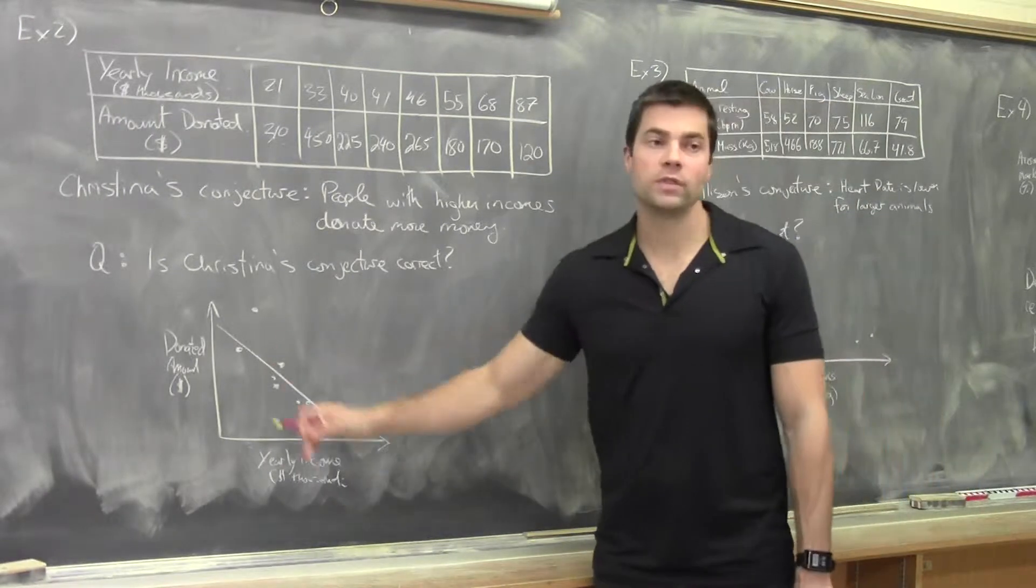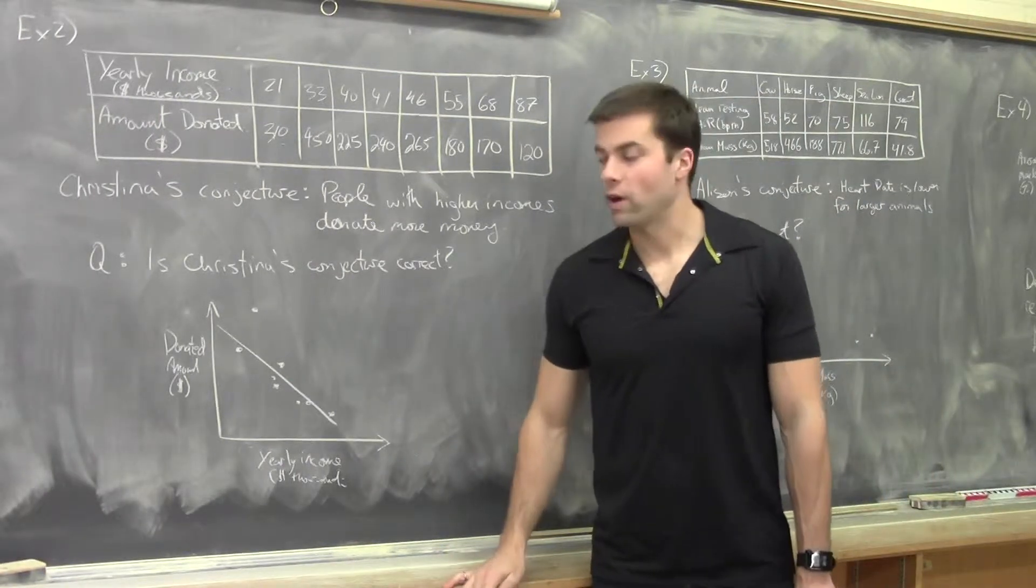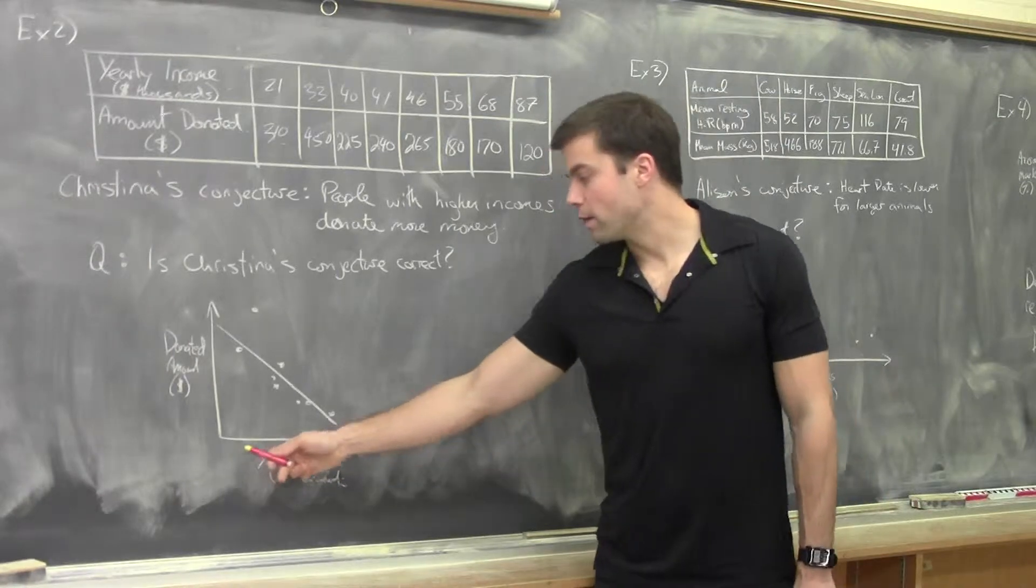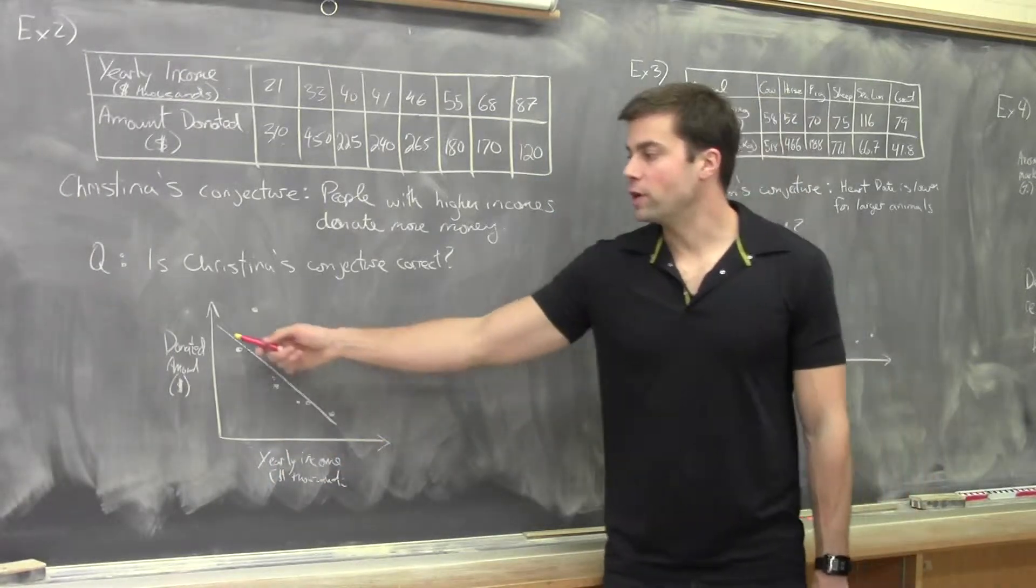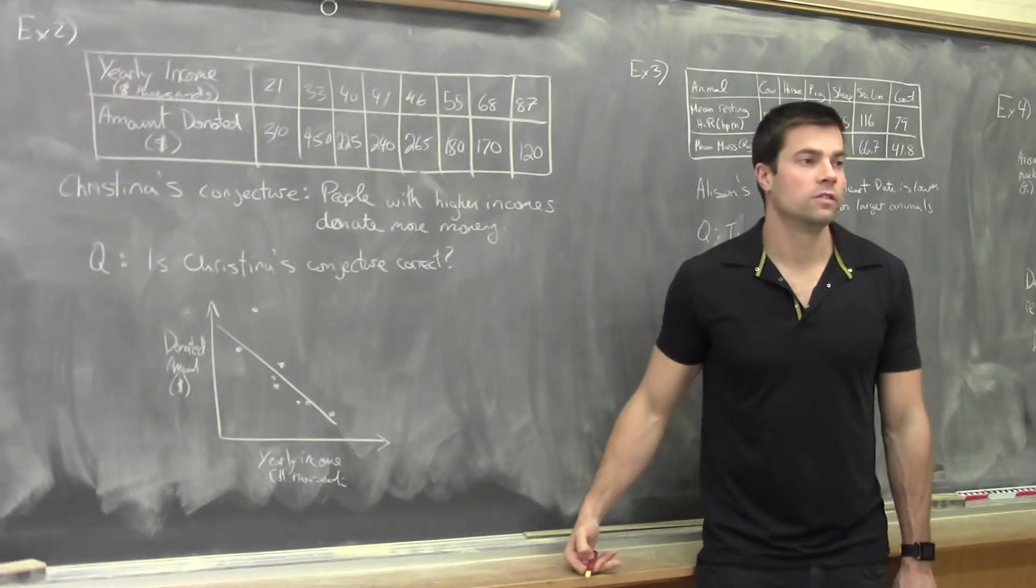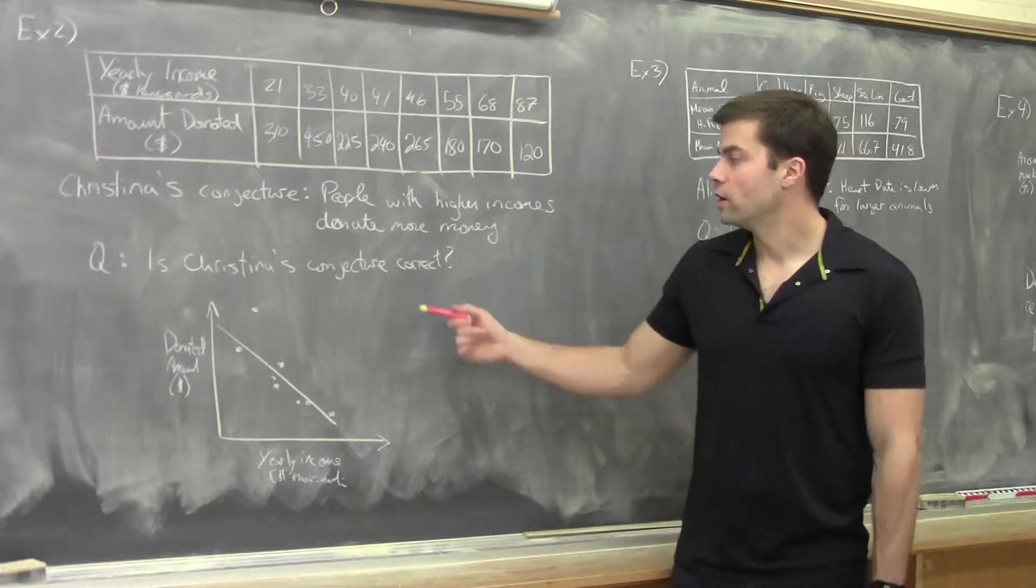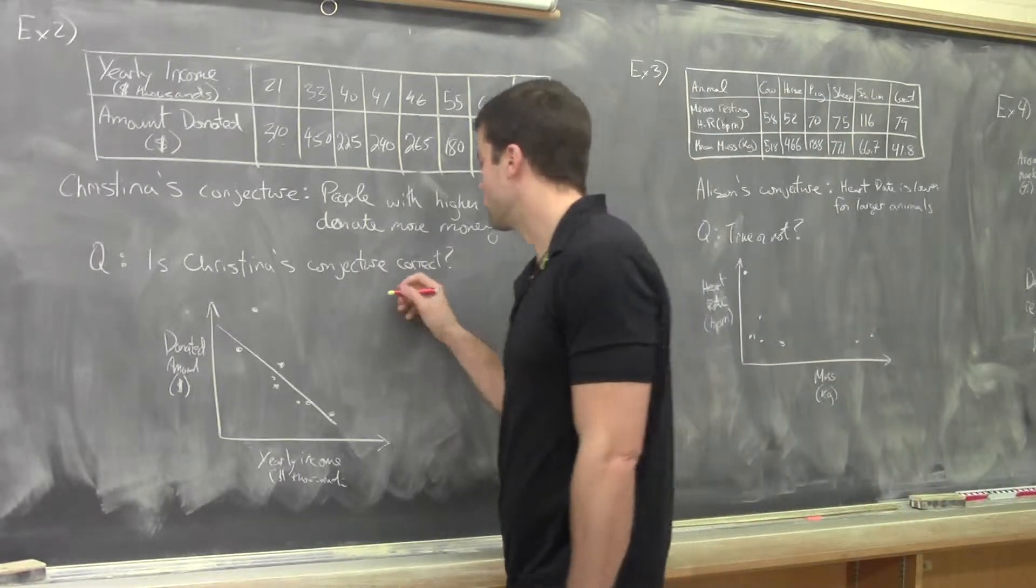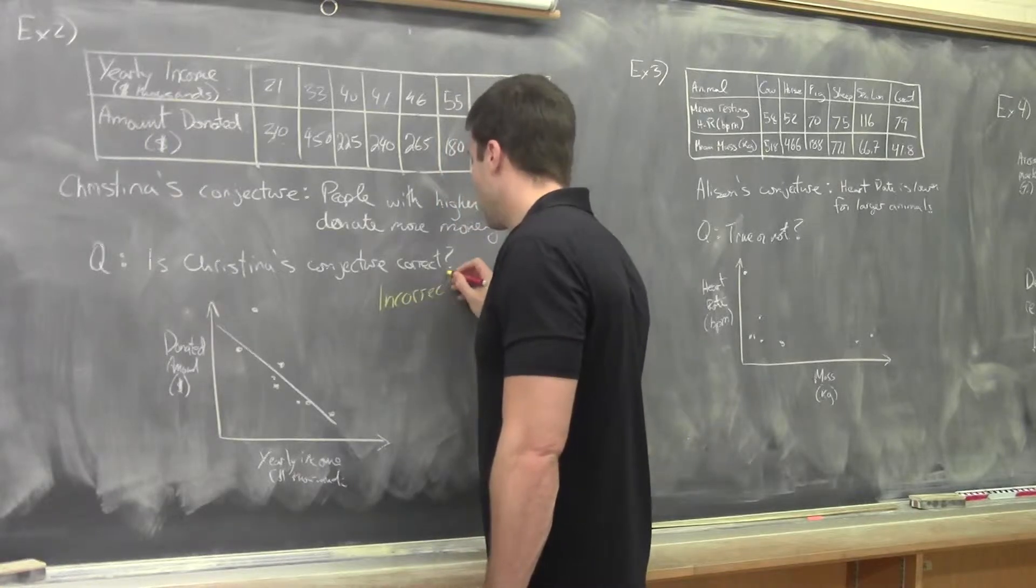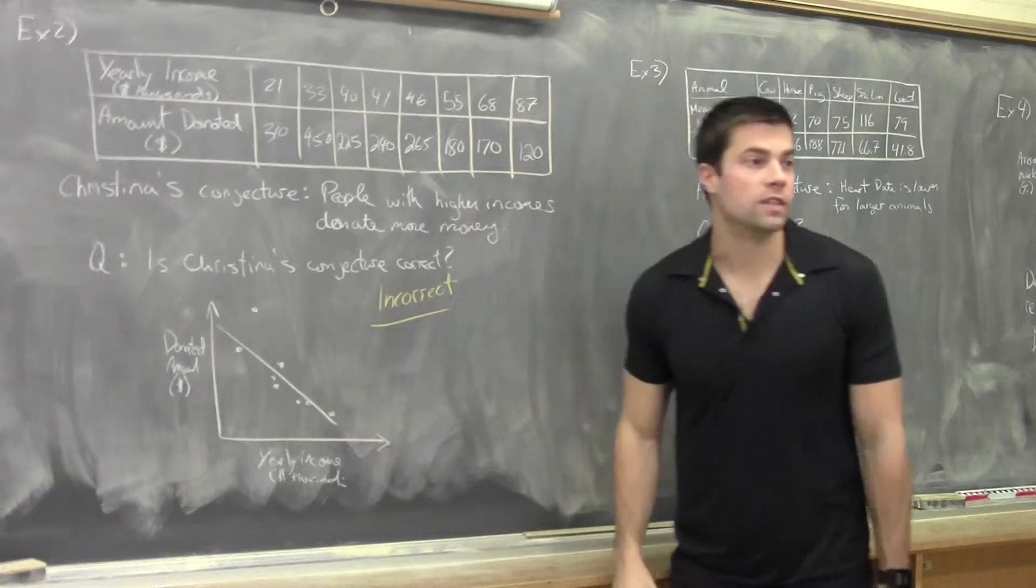As you can see, it's actually quite the opposite. What happens is actually people are making more money, their donation amount is going down. So therefore, her conjecture is incorrect, and we base that on, of course, the data.